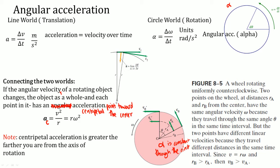As the wheel rotates in uniform clockwise motion, consider two points on the wheel — one at a smaller radius and one at a larger radius rb. Because they have the same angular velocity — they travel through the same angle — but they have different linear velocities since they travel different distances. Since v equals r times omega, the centripetal accelerations are also different. The angular acceleration, however, remains constant.